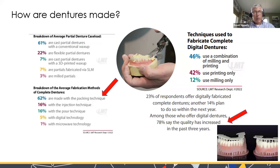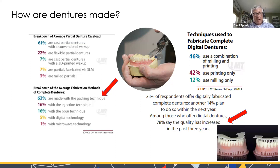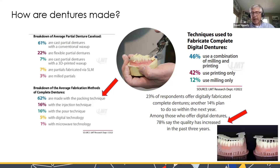Milling was our first digital denture option and there's nothing wrong with it — the fit is phenomenal and a digital record exists. The problem is throughput: it takes two to four hours to mill one denture and ties up a five-axis machine. Printing is really where it's at. Printing quality has increased dramatically in the last three years — 78% of labs agree.